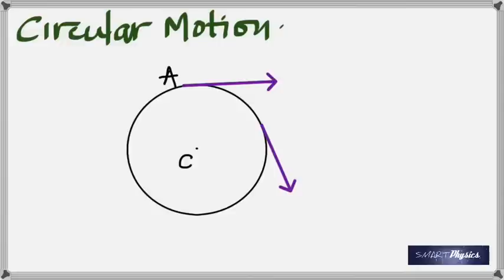Even if the magnitude of velocity is constant — like a stone on a string rotating smoothly at the same speed — is it accelerating? Yes, because it is changing direction. Velocity is a vector with both magnitude and direction; if either changes, velocity changes and there is acceleration. So when a body moves in a circle at constant speed, it still has acceleration.